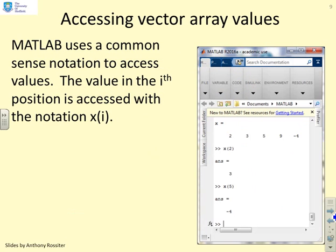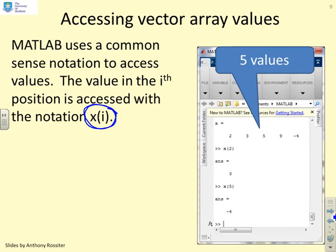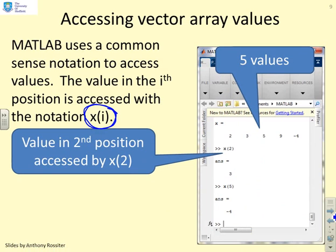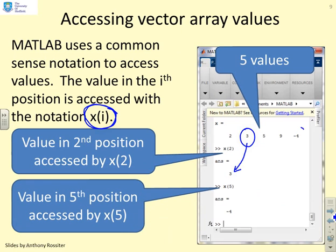What about accessing the values? How do I get the values inside the vectors? The notation is rather obvious. You use this notation here X brackets i where i is the index. So X here has got 5 values. If I want the value in the second position I just write X brackets 2 and you'll see clearly the second position is 3. If I want the value in the fifth position, well the fifth position is minus 4, so I'll just write X brackets 5 and I will get the fifth position.